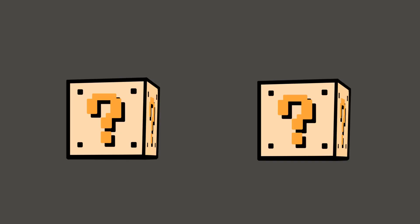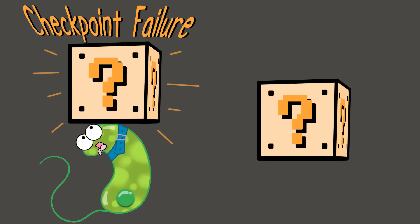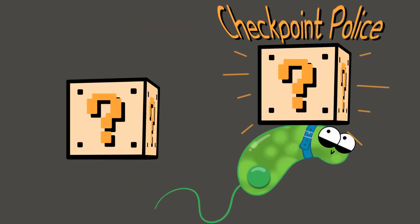So now you may have two big questions. First, what happens if the cell doesn't meet the requirements of the checkpoint? And second, what is doing the regulating of this cycle anyway?